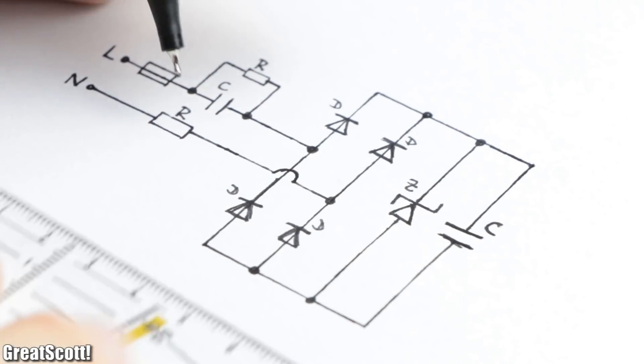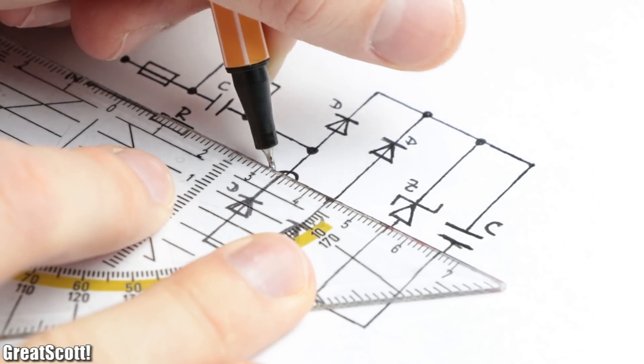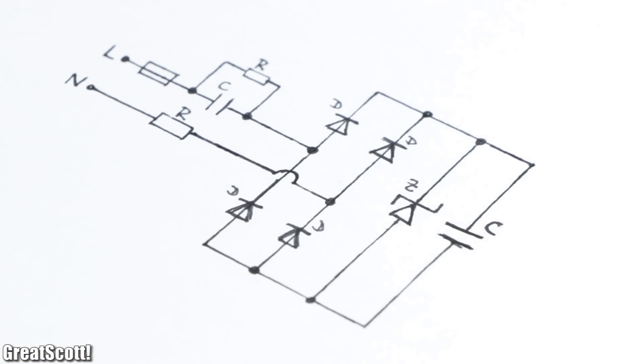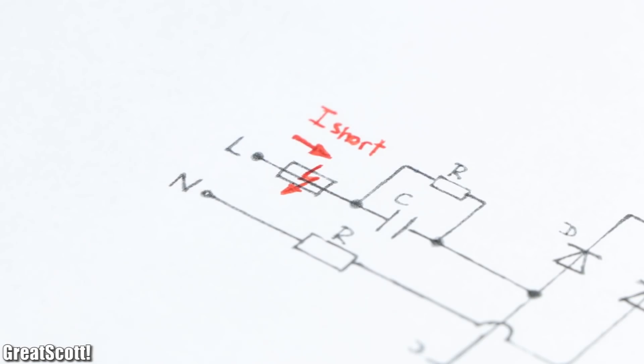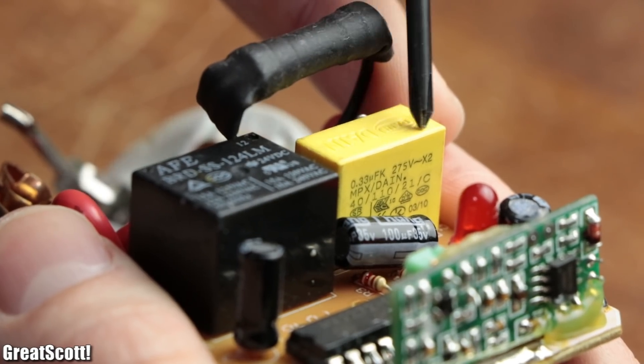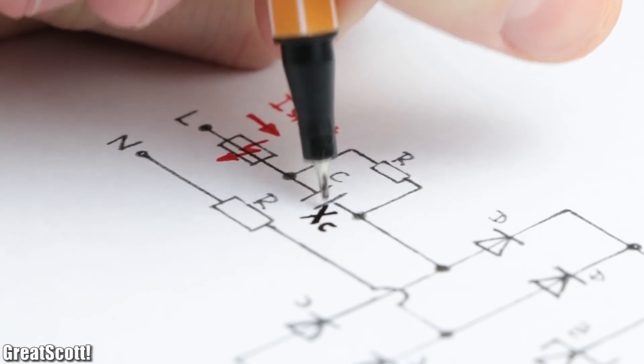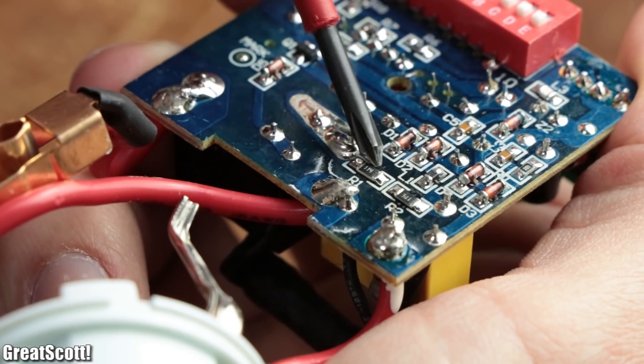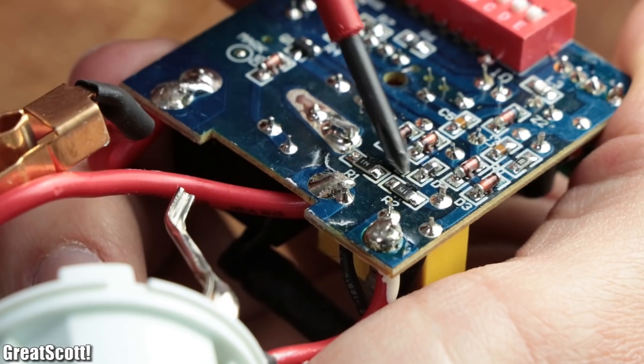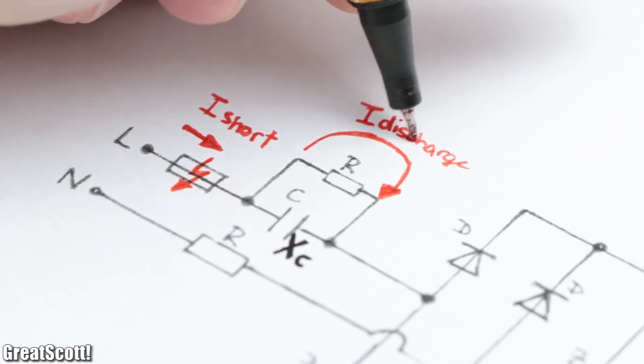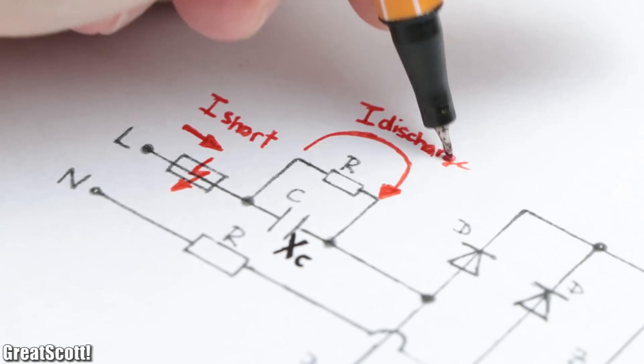After simplifying my resulting schematic a bit, it looked like this. First off we got a fuse which will blow up if something goes wrong. Next we got the capacitor which provides our apparent resistance, and parallel to it we got two 110 kilo ohm resistors which will discharge the capacitor once power is no longer applied.